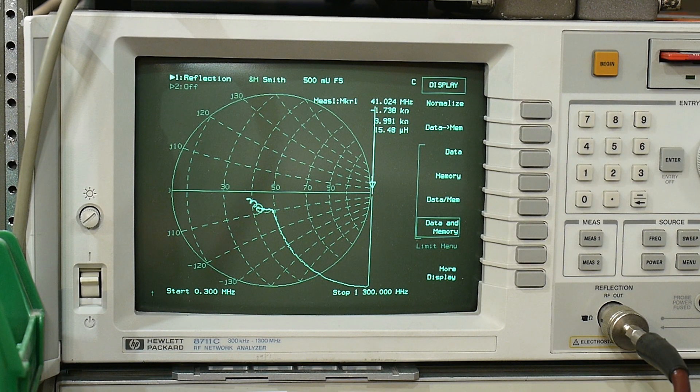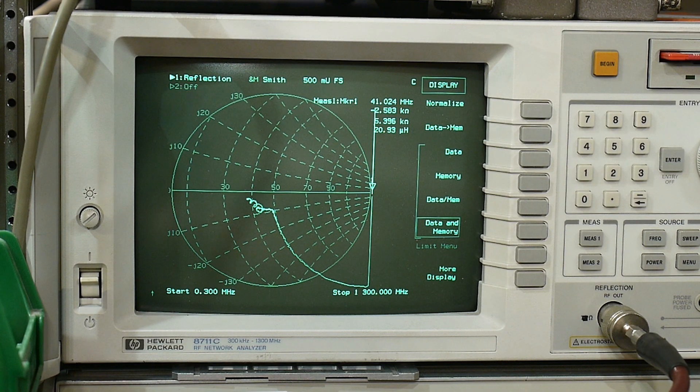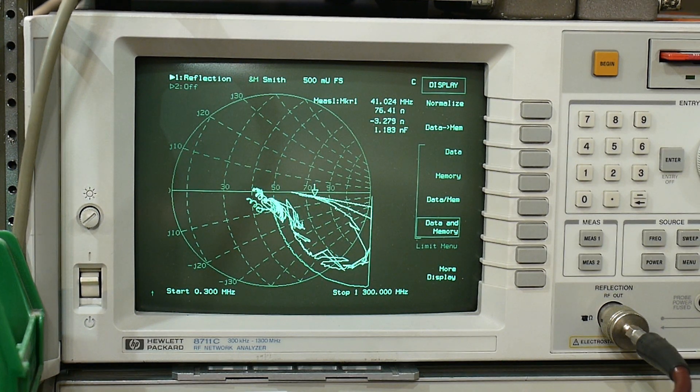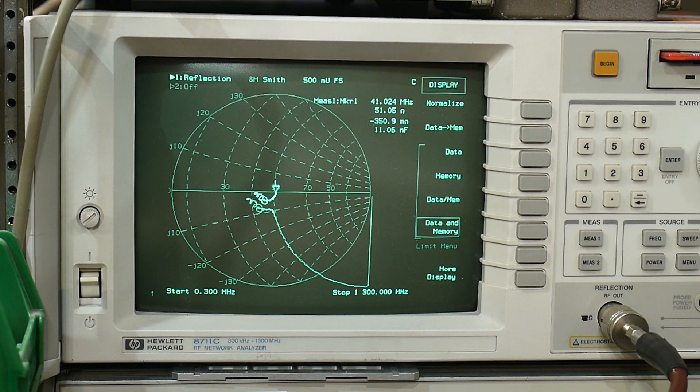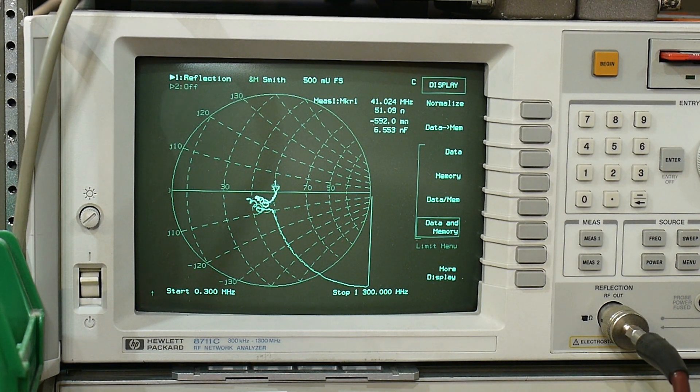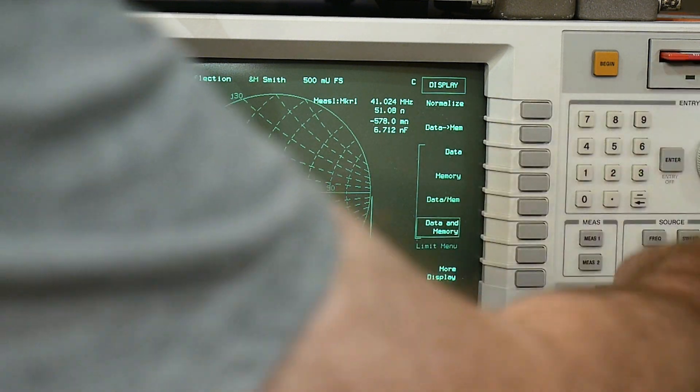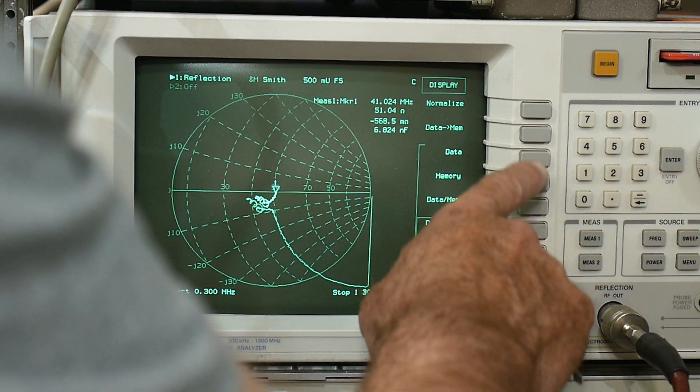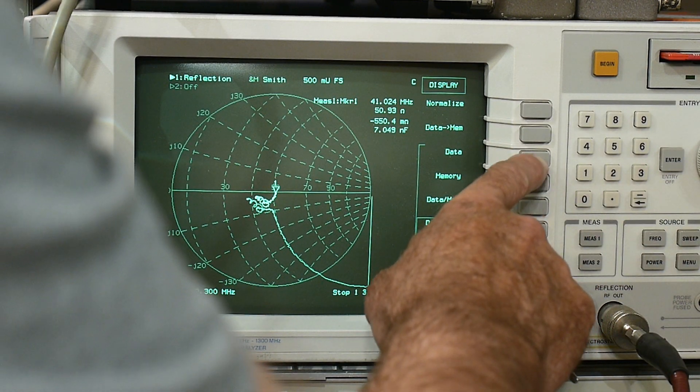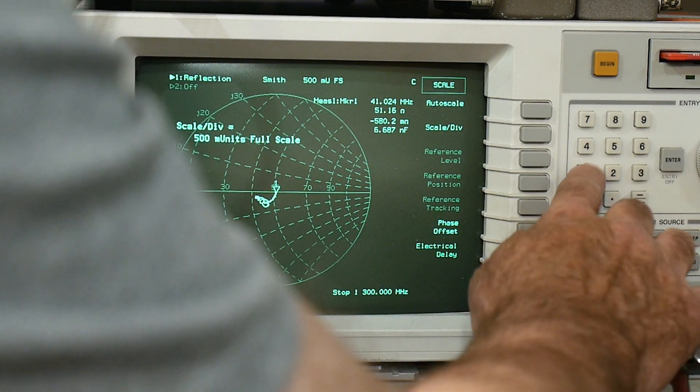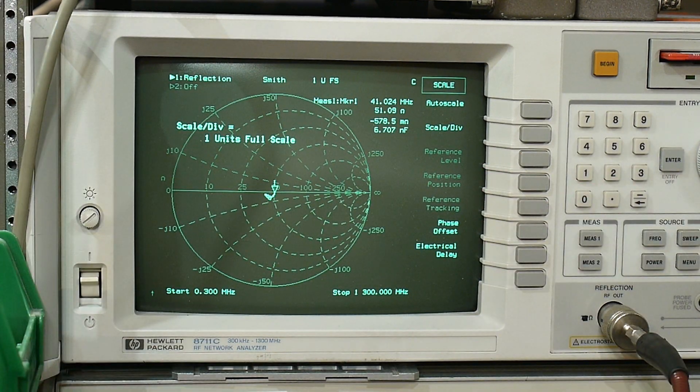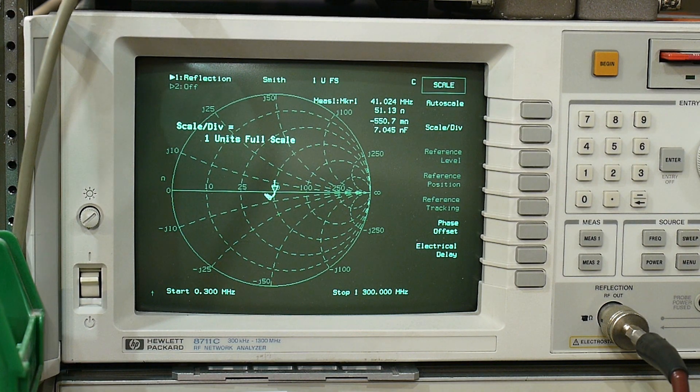Let's go ahead and do just the 50 ohm load all by itself and see if we see anything different than last time. This is the 50 ohm load all by itself. Let's get rid of that. Let's scale the one and it's the same. That's the same.